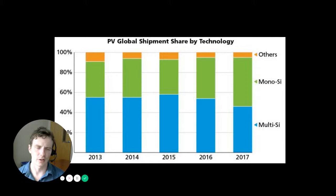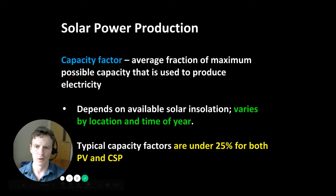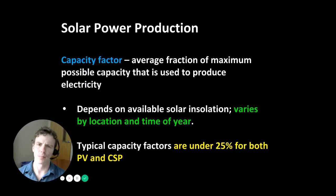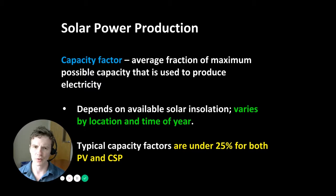This figure gives a sense of which materials dominate the photovoltaic solar market — currently a mix of multi-silicon and monosilicon. Similar to wind power, capacity factor is a useful term for understanding solar power production. Capacity factor is a value between zero and one, quantifying the average fraction of maximum possible capacity actually used to produce electricity. For solar, it depends on available solar insolation, which varies by location and time of year. Capacity factors for solar PV and CSP are typically under 25 percent.